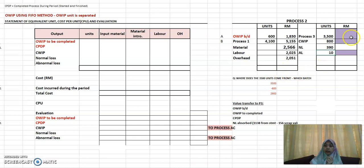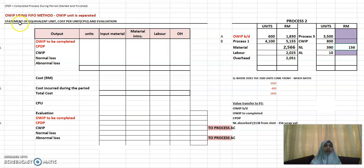You are left with three boxes that you do not know. The normal loss is 40 cents each, so that gives you 1.56. The three boxes that you need to fill up — because you have opening WIP and closing WIP, that's why you need to prepare the statement of equivalent unit, cost per unit, and evaluation.